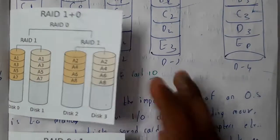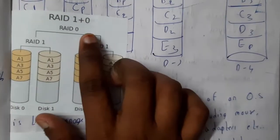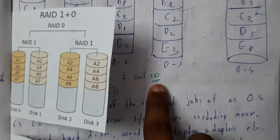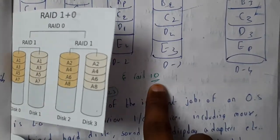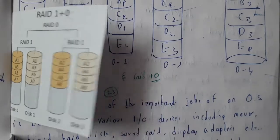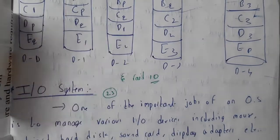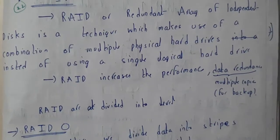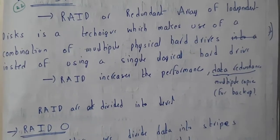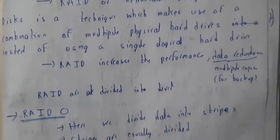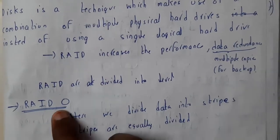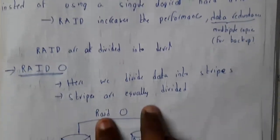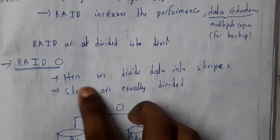RAIDs are in different levels — RAID level 0, level 1, level 2, level 3, level 4, level 5, level 6, and level 10. We will be going through the explanation for each and every level.